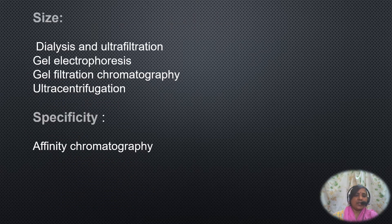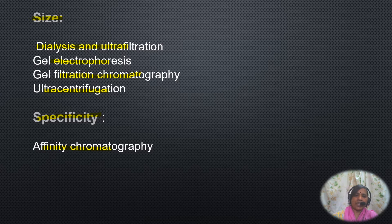Based on the size also, there are many different methods or techniques available like dialysis and ultrafiltration, gel electrophoresis, gel filtration chromatography and ultracentrifugation. Then affinity chromatography is a technique which is based on the specificity of the molecule. By using all these different techniques, we can purify a protein from the crude extract.